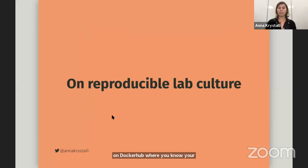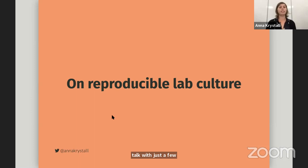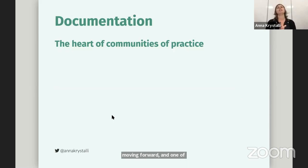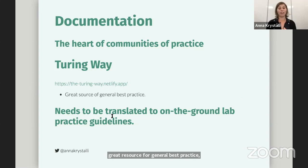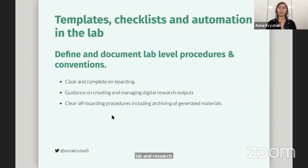I haven't got much time left, so I just wanted to end my talk with a few general thoughts about moving forward. One of them is on reproducible lab culture. Documentation is the heart of communities of practice. For me, projects like the Turing Way — which is a community-sourced guide to reproducible data science — are a great resource for general best practice. But for this to be valuable on the ground, it really needs to be translated to specific lab or research group practices. I think we can use templates, checklists, and automations to help. What people need to focus on is providing clear and complete onboarding instructions, guidance on how to create and manage digital resources, and clear off-boarding procedures as well.